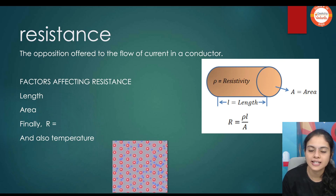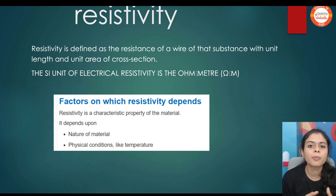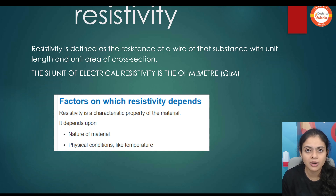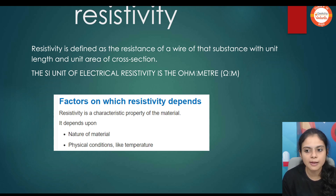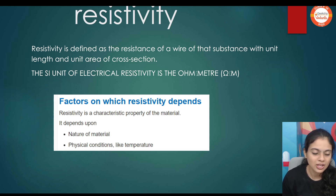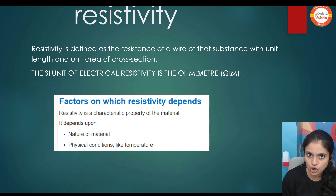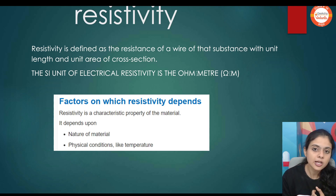What is resistivity? The rho in this formula is nothing but resistivity. It depends upon the nature of the material. If you take two different materials, they will have different resistivity. It is not dependent on temperature or on length and area. Resistivity is defined as the resistance of a wire of that substance with unit length and unit area. The SI unit is ohm-meter.